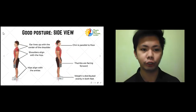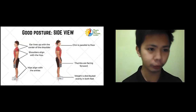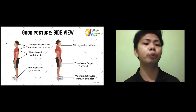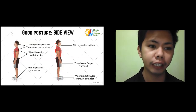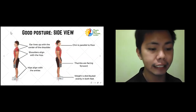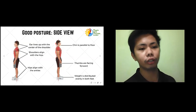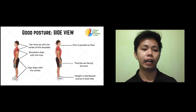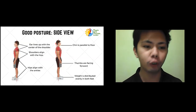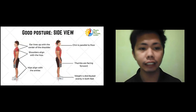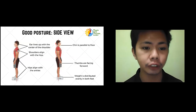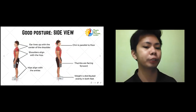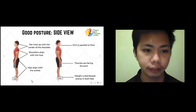For good standing posture from the side view, we draw an imaginary line connecting your ears, shoulders, hips, and ankles — they should all line up. The ear should line up with the center of your shoulder, which should align with your hips, and the hips should align with your ankles.